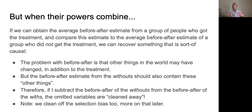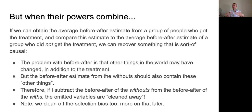But when we put those together, it actually sort of works. If we can obtain the average before-after estimate from a group of people who got the treatment — the withs — and then compare this to the average before-after estimate of a group who did not get the treatment — the withouts — we can recover something that's sort of causal. The problem with the before-after is that other things in the world might have changed in addition to the treatment.